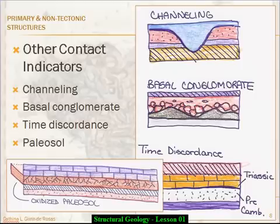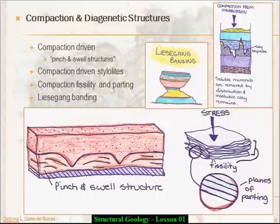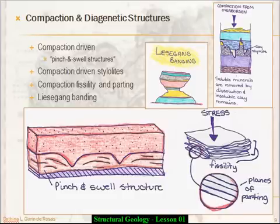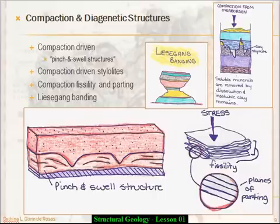Now we'll talk about compaction and diagenetic structures. Diagenetic means these are structures associated with the genesis of the rock. Compaction, like we talked about earlier, is basically a pressure exerted by forces — usually gravity pressure coming from above. As sediment is deposited, you create a heavy overburden that drives lithification of the rock beneath it, as does depth and temperature. You can see here these pinch and swell structures. You have to be very careful because pinch and swell structures are an important tectonic indicator of tensile and compressional stress — and I don't mean gravity-driven compressional stress like we're looking at here. This illustration shows a pinch and swell structure due to differential stress in the overburden.